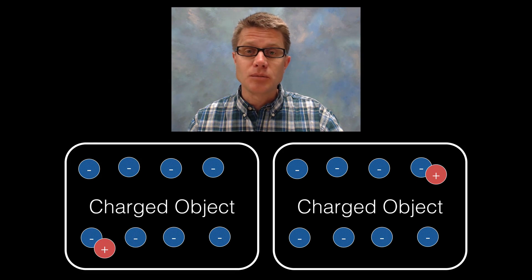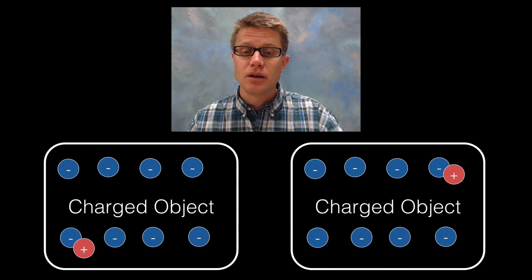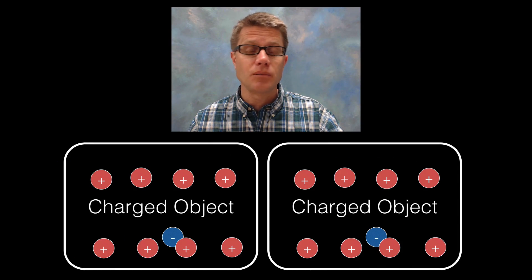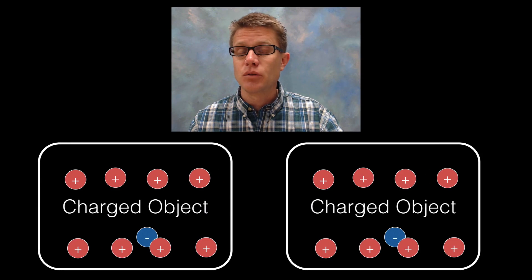Let's say we take two objects that have the same charge. In this case they both have negative charges — they are going to push away from each other. Same thing if they are both positive: if I let them go they are going to move away from each other.